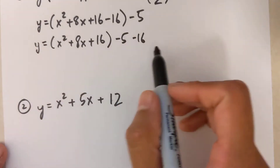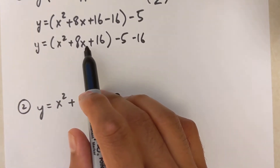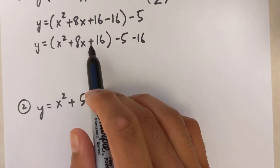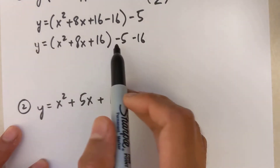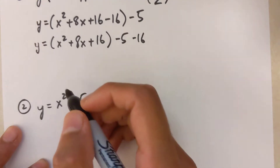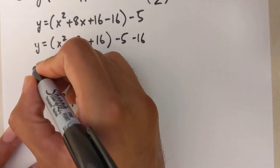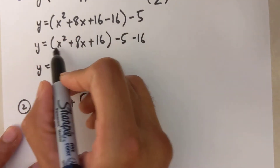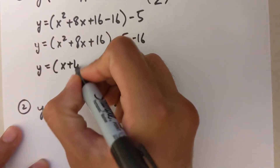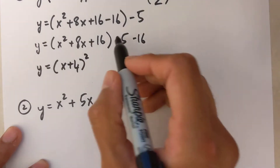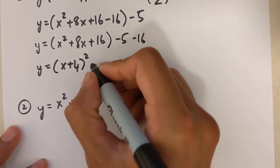If you've done these steps correctly, this should always be a perfect square trinomial. If you're not familiar with perfect squares, review that chapter first. Since we do know perfect squares, we can turn this bracket into x plus 4 squared.